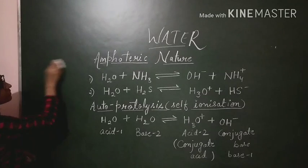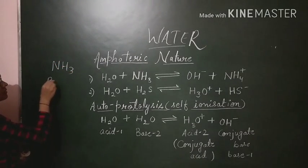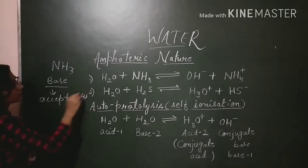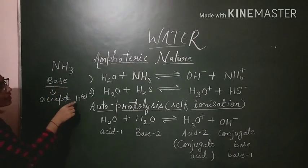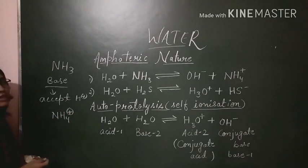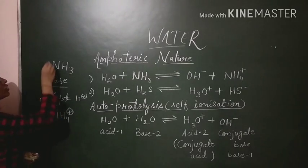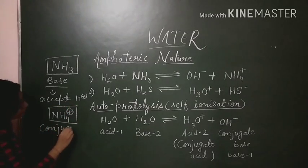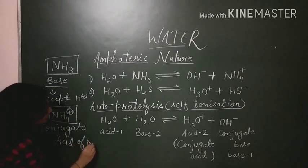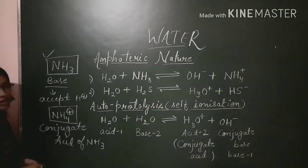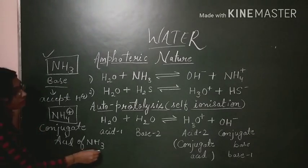Now let us consider a base. NH3 is a base since it is able to accept H positive. After accepting H positive, the species formed will be NH4 positive. So when a base accepts a proton, it converts into the conjugate acid of that particular base.